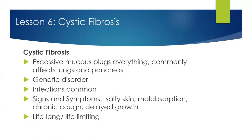Cystic fibrosis is excessive mucus that plugs everything. It commonly affects the lungs and, by association, also affects the pancreas. Cystic fibrosis causes thick mucus which obstructs airflow in the bronchioles and can cause permanent damage to the bronchial walls. Infections with these patients are very common. Signs and symptoms include salty skin, a look of malabsorption, a chronic cough, and delayed growth. It's a lifelong and life-limiting condition — patients may require a double lung transplant, but excessive mucus can still occur. The big takeaway is that thick mucus obstructs airflow in the bronchioles.